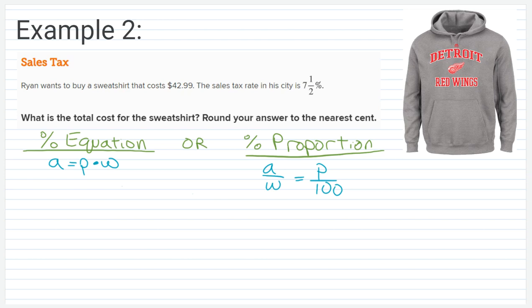Now students get thrown off by this right here because they see that fraction. Again, half, you know the decimal equivalency or you should know. So this is just seven and five tenths percent. So don't let that fraction throw you off. Just rewrite in its decimal form or with the decimal point. We do have to rewrite it in its decimal form when we do the equation though.